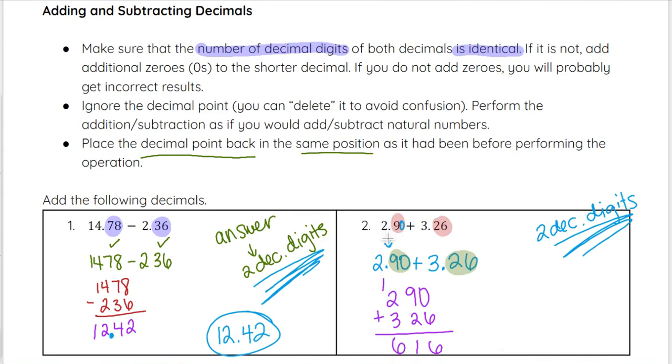So again, it doesn't seem reasonable that 616 would be our answer. 2 and 3 with a little bit of portion or part of another whole being the decimal 0.90 and 0.26, when you add those together, that's essentially like adding almost like a 2 and a 3. You're going to get about 5 or somewhere around there. 616 is not even close to that.